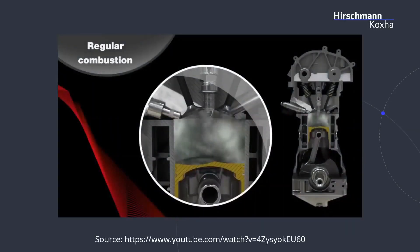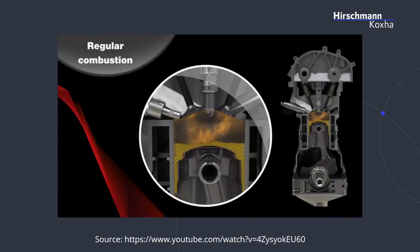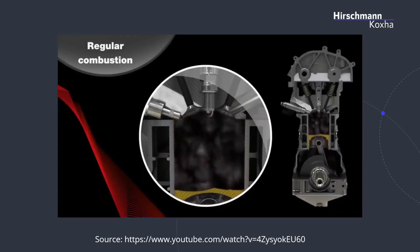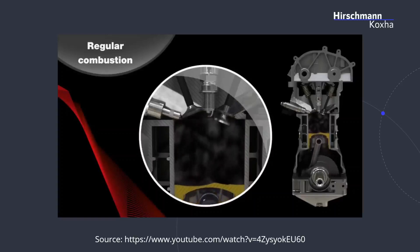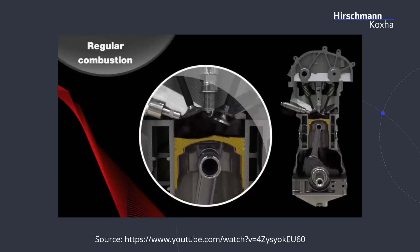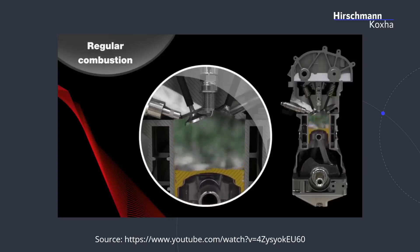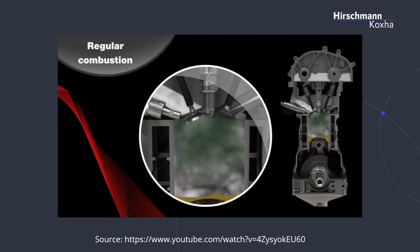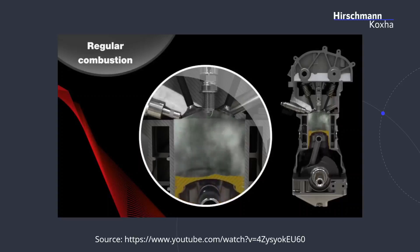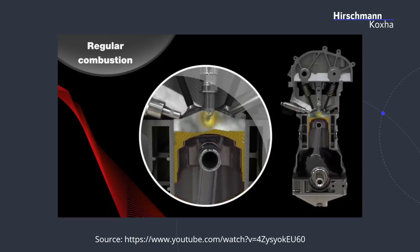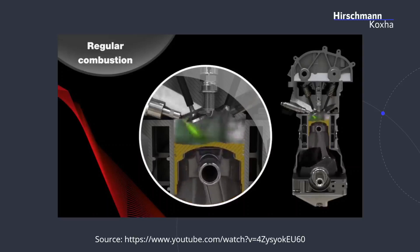Now we're going to look at this little movie by NGK. This is a regular combustion. Piston goes down. Now the exhaust valve should open — there you can see it opens. So we extract the gases. Now the intake stroke — piston moves back down again. On the next stroke, we compress it, then ignite it, and this causes the piston to move back down. This is how it's supposed to be.